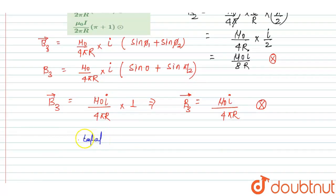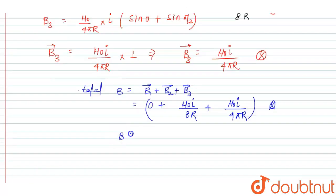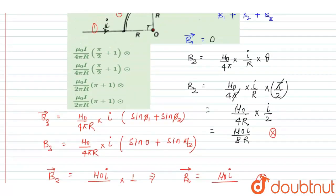The total magnetic field B = B1 + B2 + B3 = 0 + μ₀I/8R + μ₀I/4πR. Simplifying, the total magnetic field equals μ₀I/4πR × (π/2 + 1), directed into the plane. This is the right answer, and option A is correct. Thank you.